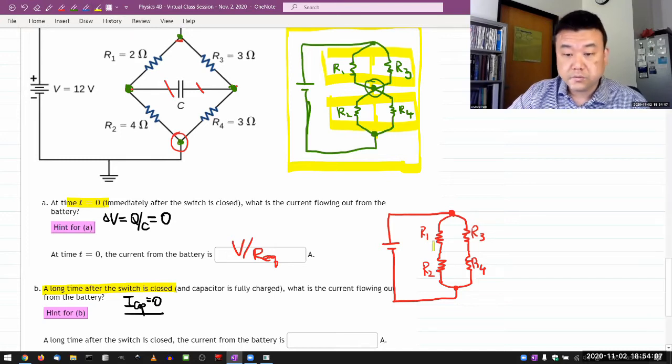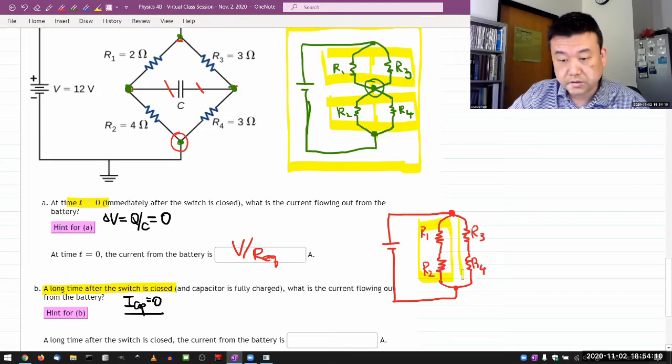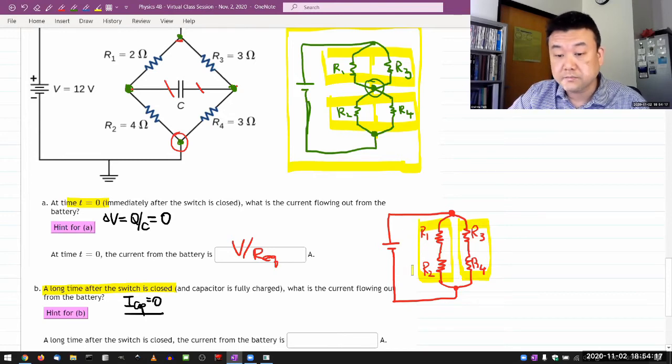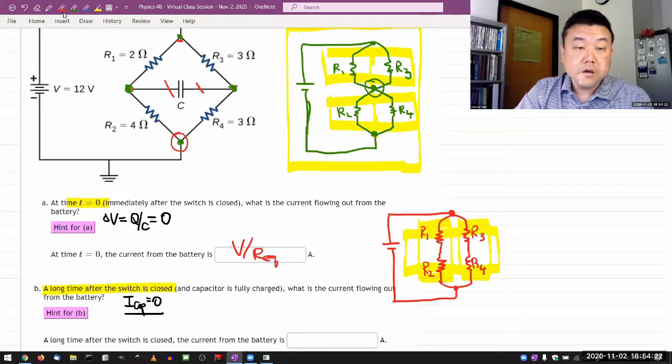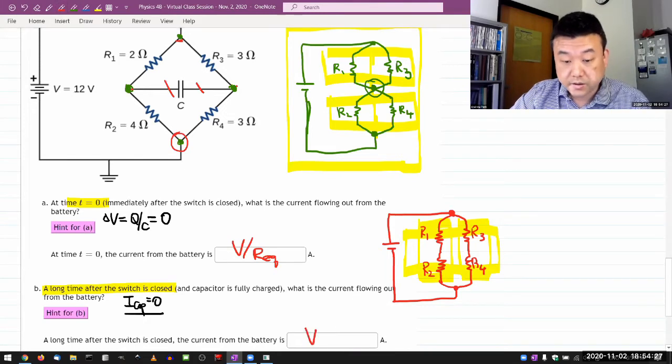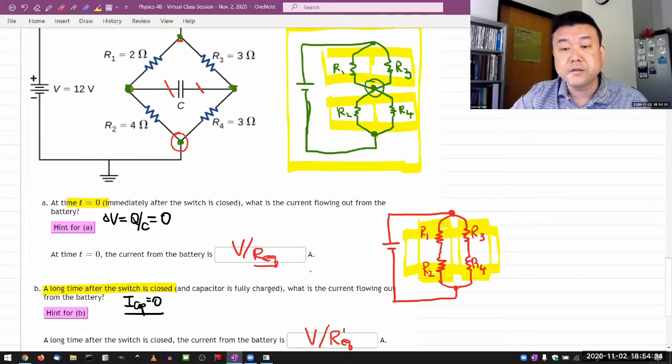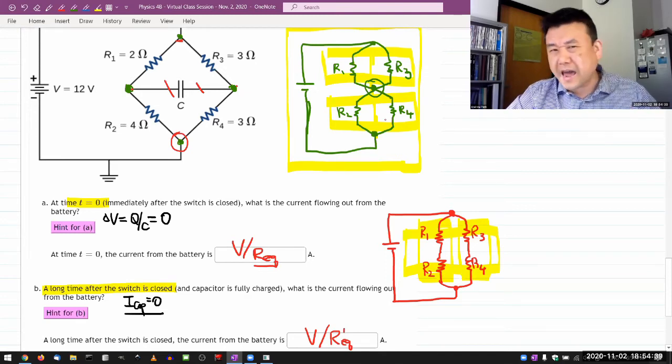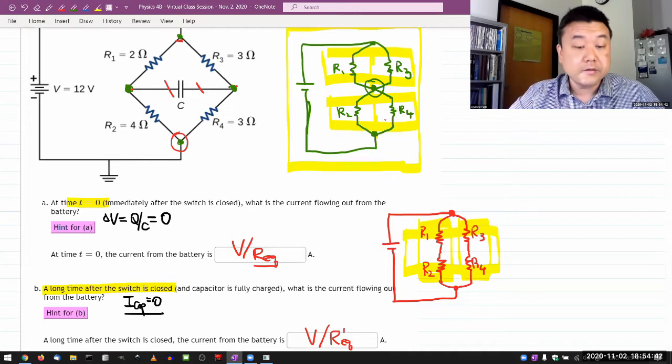These two resistors are in series. These two resistors are also in series. Add them as series. And then the resulting equivalent resistance is in parallel. So add them as parallel. You'll get some equivalent resistance.